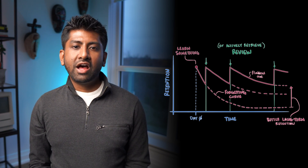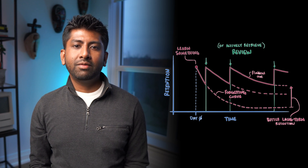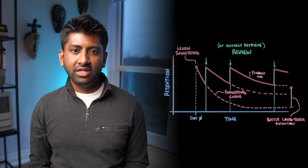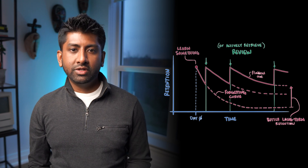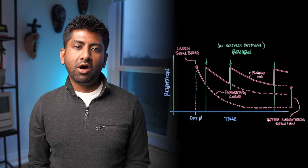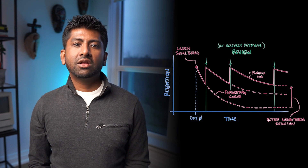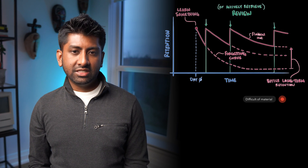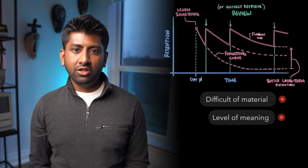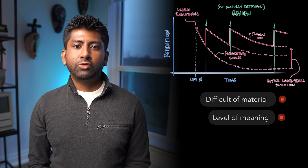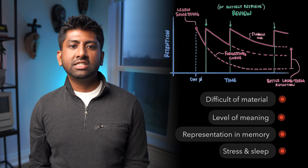A typical graph of the forgetting curve shows that humans tend to lose their memory of newly learned information in a matter of days or weeks unless they consciously review the material. Ebbinghaus hypothesized that the speed of forgetting depends on a number of factors such as the difficulty of the material learned, how meaningful the material is to the learner, its representation in memory, and other psychological factors such as stress and sleep.